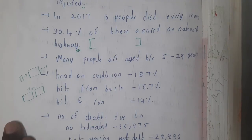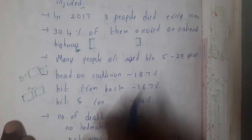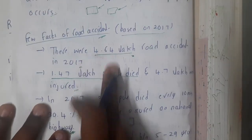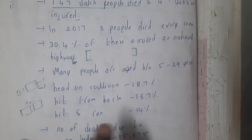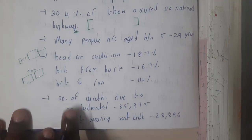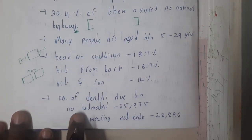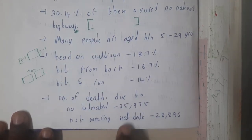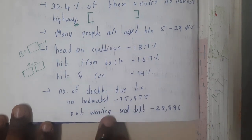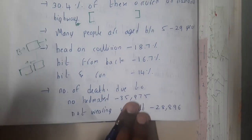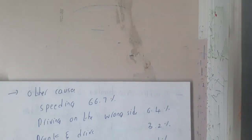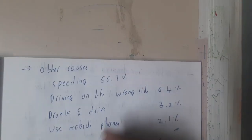These are just statistics — you can approximately remember the values. Deaths due to not wearing a helmet are around 35,000 to 36,000, and deaths due to not wearing seat belts in cars are around 28,896, which you can approximate as 30,000.